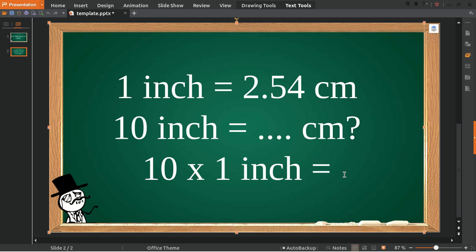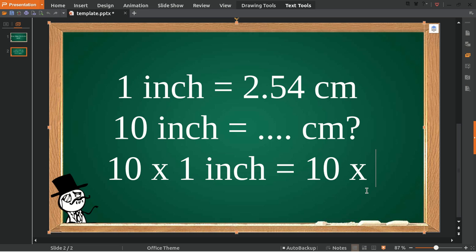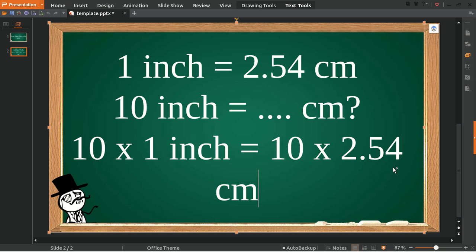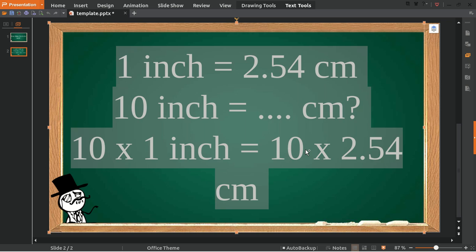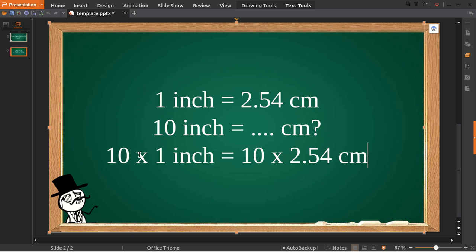And then multiply it with 2.54 centimeters. We have 10 on the left, so we must put it on the right as well, because that's what we're going to multiply the centimeters with.